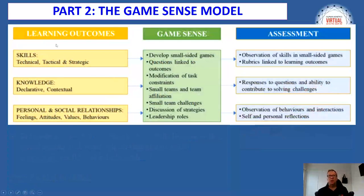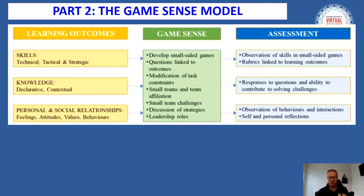Putting this into key learning outcomes, we have technical, tactical, and strategic skills. Then knowledge: declarative knowledge — the student's knowledge about a game, how it's played, the rules, why you use certain skills — and contextual knowledge, which is the ability to apply that knowledge into tactics and strategies. And importantly, personal and social relationships. These three learning outcomes link closely into the game sense approach.